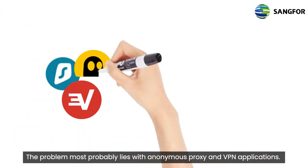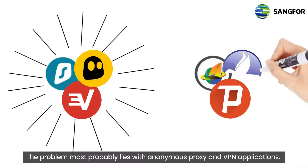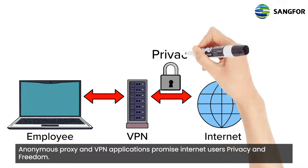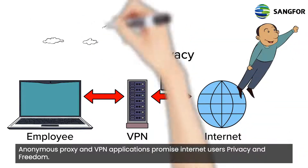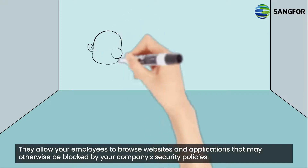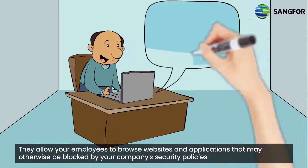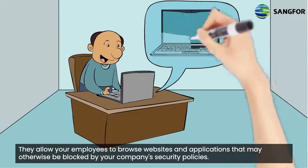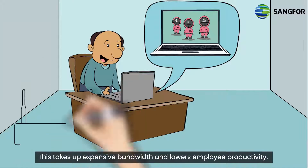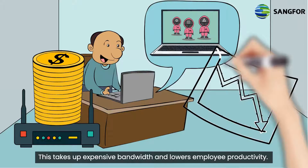The problem probably lies with anonymous proxy and VPN applications. Anonymous proxy and VPN applications promise internet users privacy and freedom. They allow your employees to browse websites and applications that may otherwise be blocked by your company's security policies, taking up expensive bandwidth and lowering employee productivity.